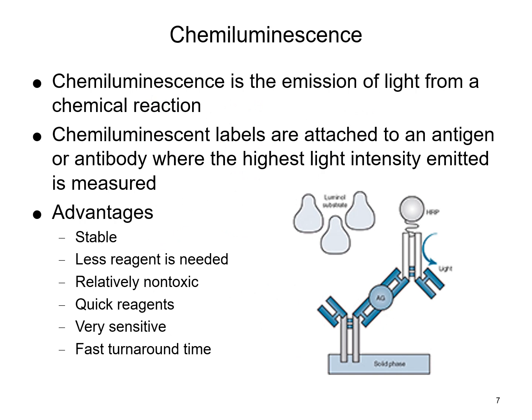Another method is chemiluminescence, which looks for the emission of light from a chemical reaction. Labels are attached to a specific antigen or antibody, and you're looking for the highest light intensity to be emitted. There are advantages to this method over others, including sensitivity, stability, and turnaround time.